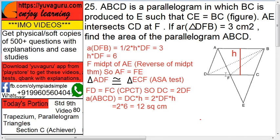F is the midpoint of AE. By the midpoint theorem applied to triangle EBA: C is a midpoint and CF is parallel to AB because opposite sides of a parallelogram. Since C is a midpoint and CF is parallel to AB, F is the midpoint of AE. You can check the triangle chapter for the proof.